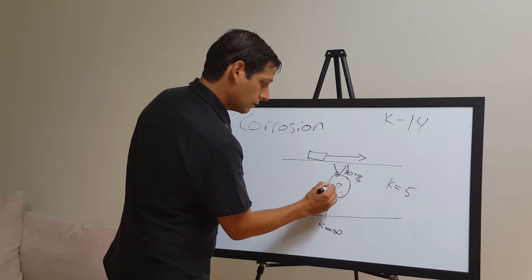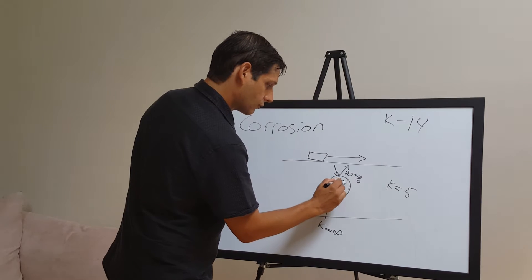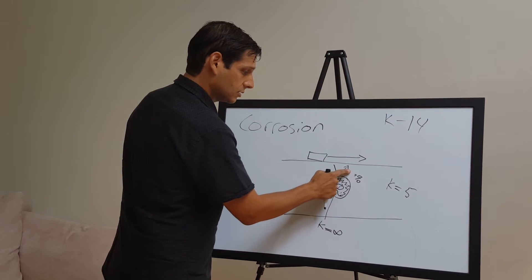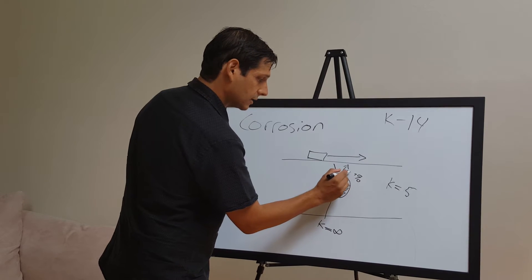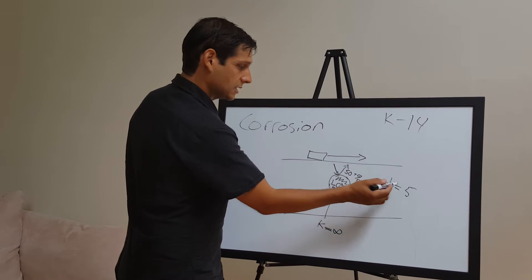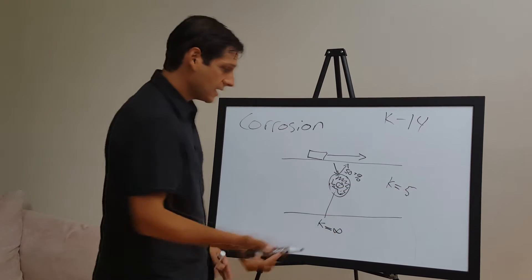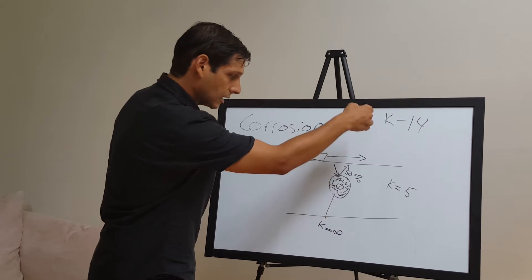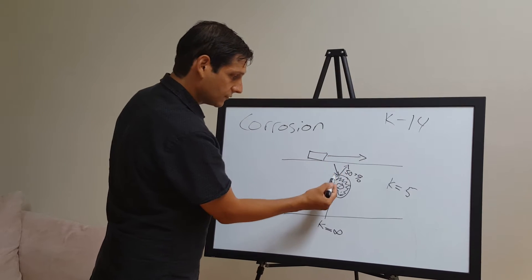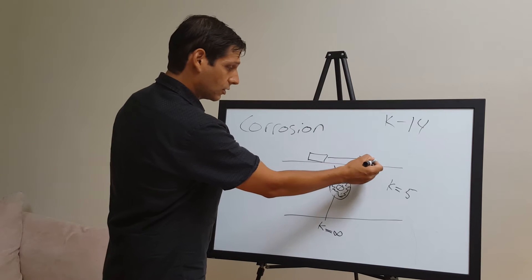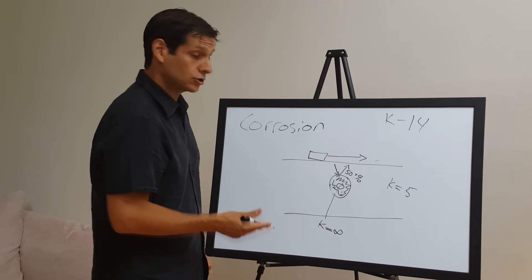But if you get this reduction and the rest of this is corrosion, then you're going to get a smaller percentage that's reflected. Maybe it's fifty percent, because the difference between five and fourteen is smaller than the difference between five and infinity. If you're getting a smaller percentage of the wave's energy that's being reflected back, you're going to have a lower amplitude reflection at the ground surface.